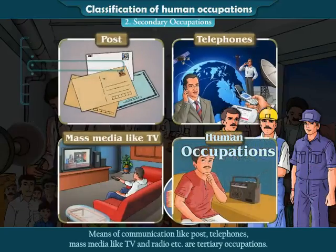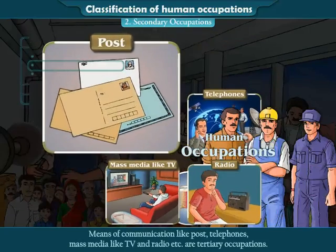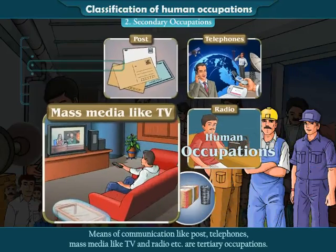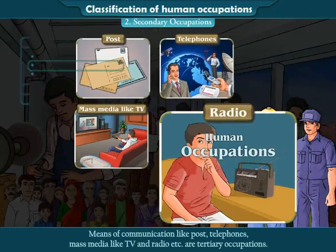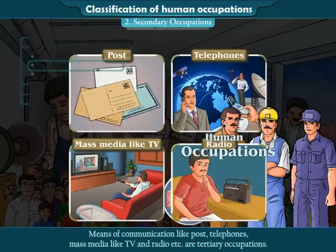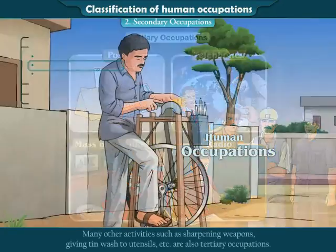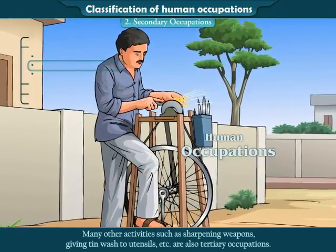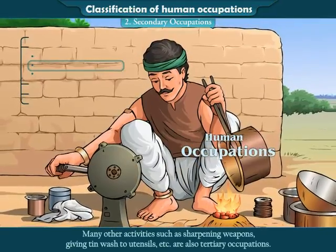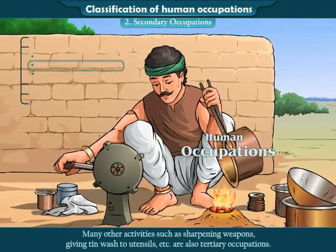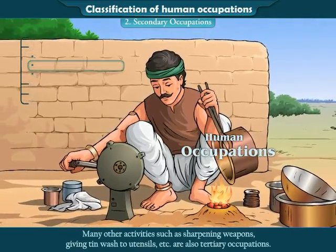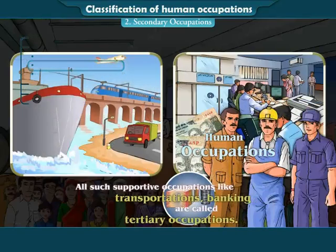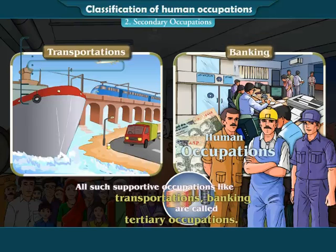Means of communication like post, telephones, mass media like television and radio, etc., are tertiary occupations. Many other activities such as sharpening weapons, giving tin wash to utensils, etc., are also tertiary occupations. All such supportive occupations like transportation, banking, etc., are called tertiary occupations.